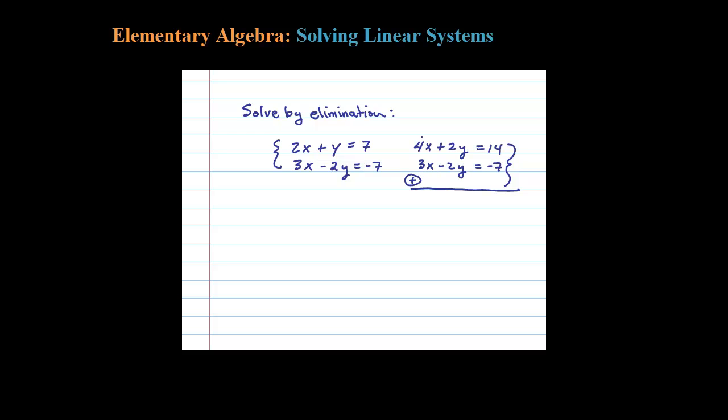So what's left after I add is 7x equals 7. So I eliminated the Y and that allows me to solve for X. Dividing both sides by 7, we have X equals 1.